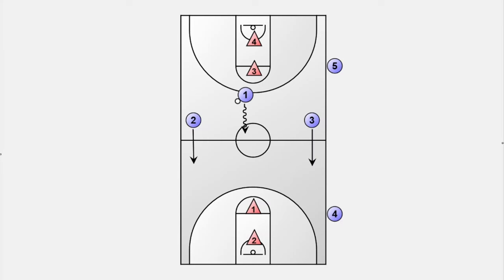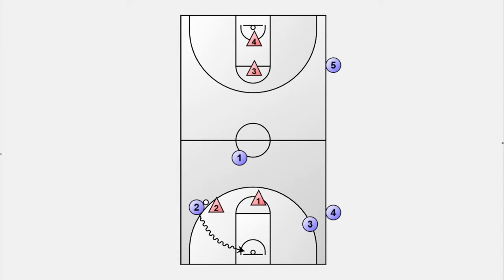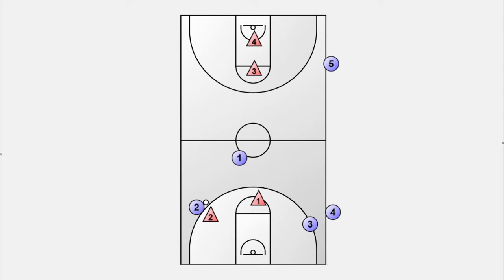The drill starts as a 3-on-2 fast-break. The ball handler makes the top defender commit and passes the basketball to one of the players running along the sideline. The first option is to finish at the rim. If the player with the ball gets stopped by the back defensive player, player 1 can use the second option and make a basket cut through the key.